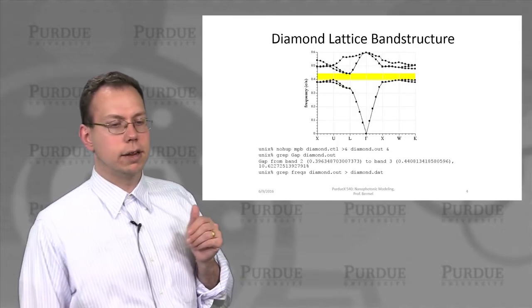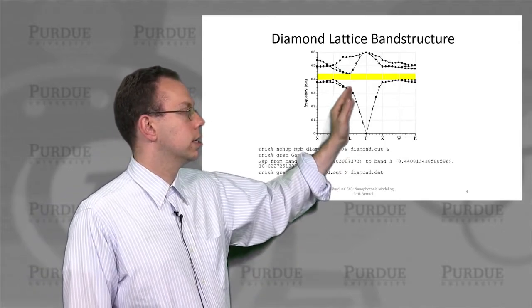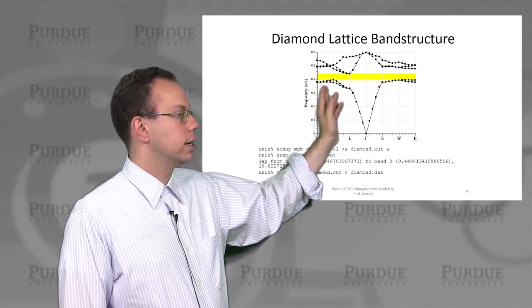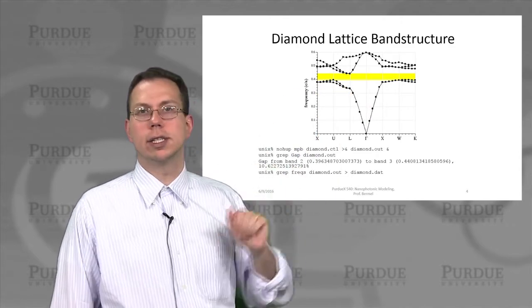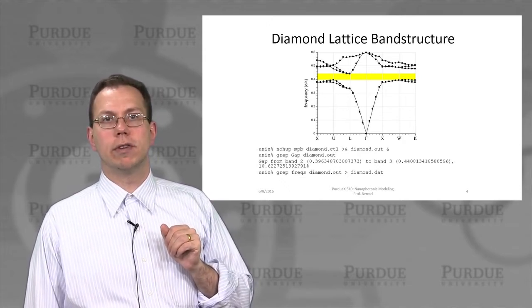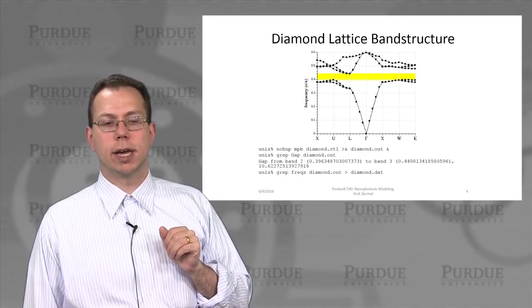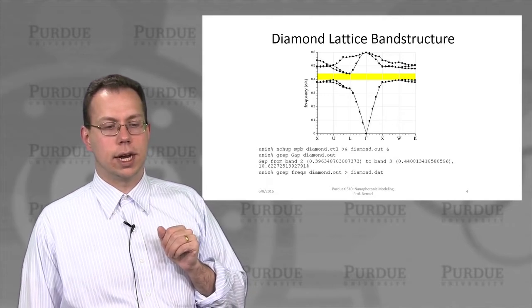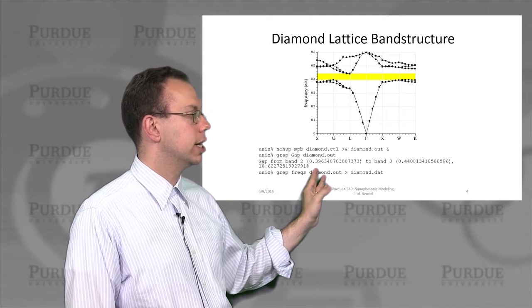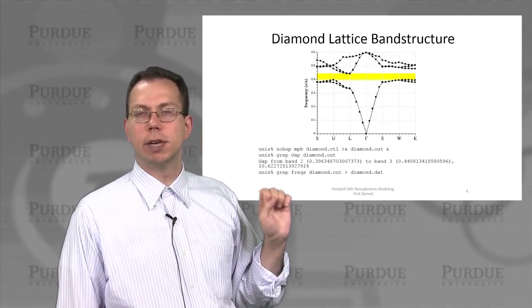And then the final result that we got for the band structure looks like this. And I've just added this extra yellow bar, but you can see that this matches very closely with the results that we showed previously for the 3D photonic band gap. And you can actually explicitly calculate the exact size of the band gap relative to the mid-gap point, and you can see that the size is about 10.6%.